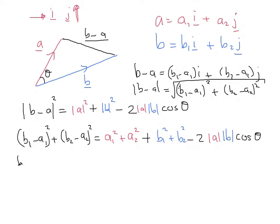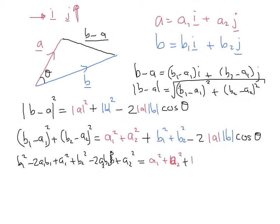Let's expand out the left-hand side: b1 squared minus 2a1b1 plus a1 squared, plus b2 squared minus 2a2b2 plus a2 squared. And then what that equals is a1 squared plus a2 squared, plus b1 squared plus b2 squared, minus 2 times the length of a times the length of b times cosine theta. What have we got cancelling here? We've got b1 squared on the left cancelling with b1 squared on the right, a1 squared cancelling with a1 squared, b2 squared cancelling with b2 squared, and a2 squared cancelling with a2 squared.